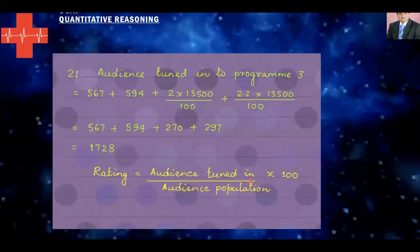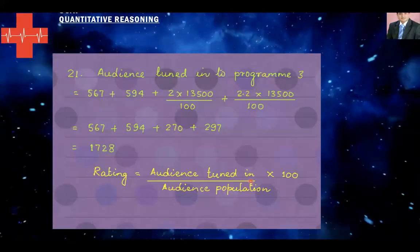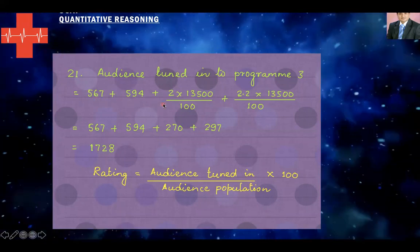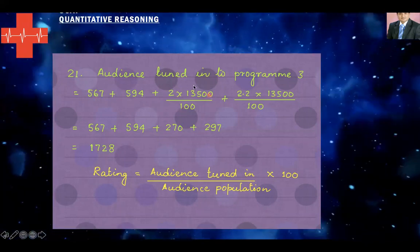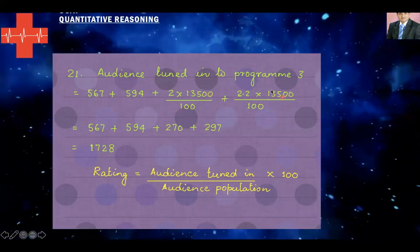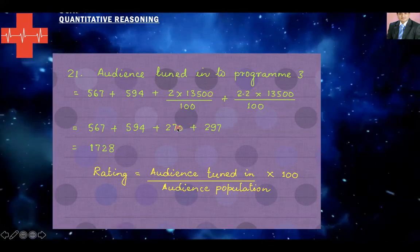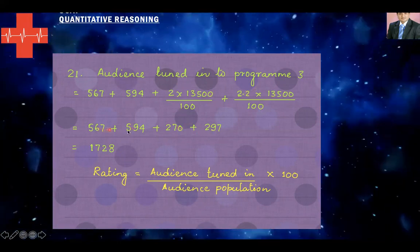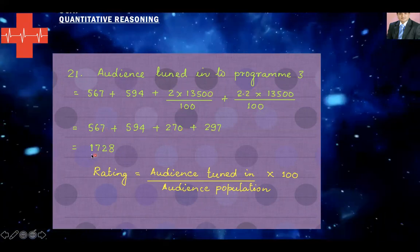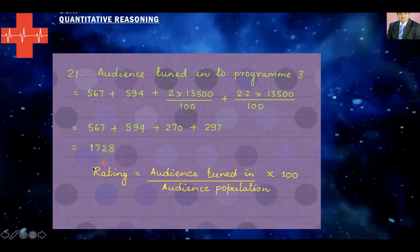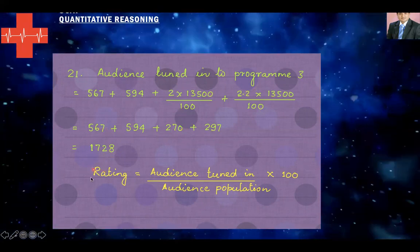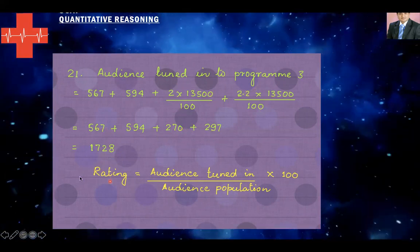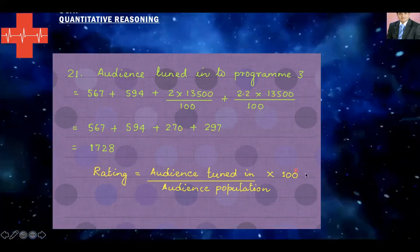Here comes the detailed solution. While solving, I calculated the audience for both missing entries and got 270 and 297. Adding all four numbers gives 1728. That was the formula used to calculate the audience. So the answer is 1728.